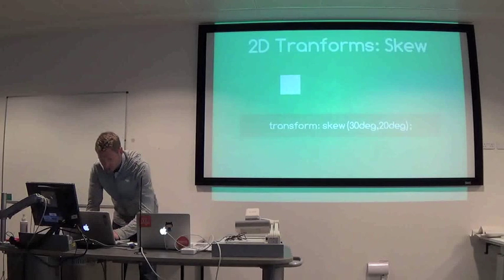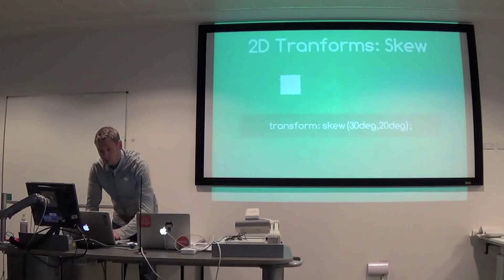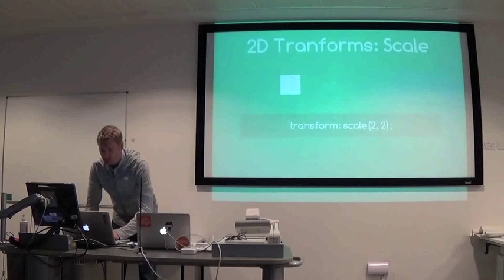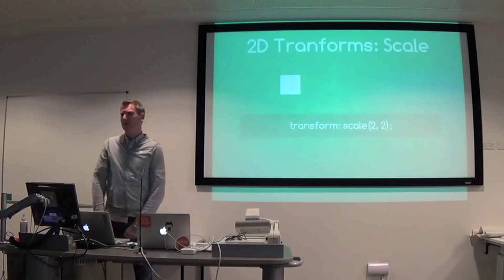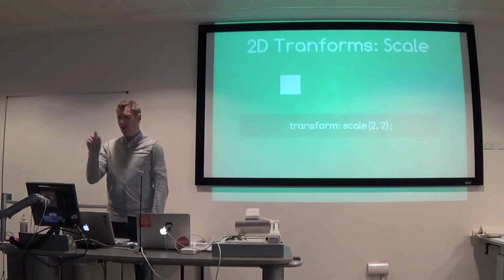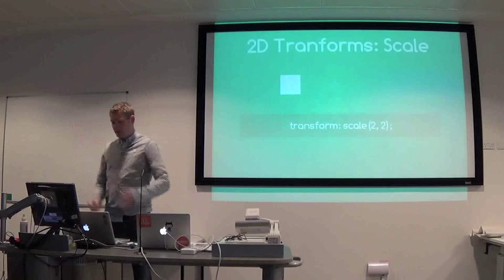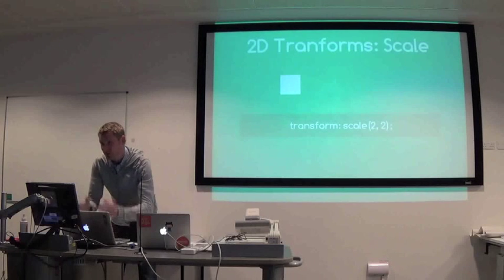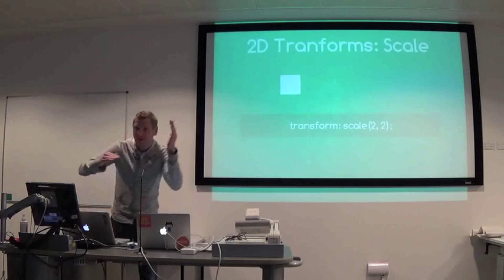Skewing doesn't seem to work very well in Chrome. Scale scales from the middle by default. That's actually one reason why scaling with transforms is better than animating height and width — you don't have to worry about absolute positioning from the top left and moving it at the same time. You've also got a transform-origin property so you can move the origin point for rotations.